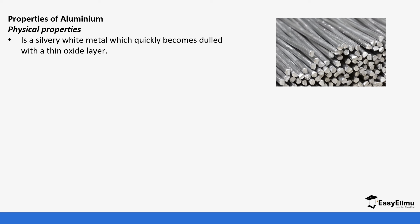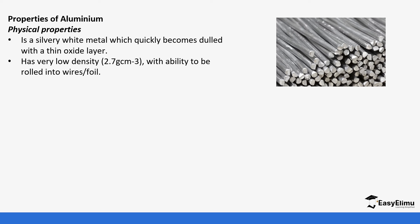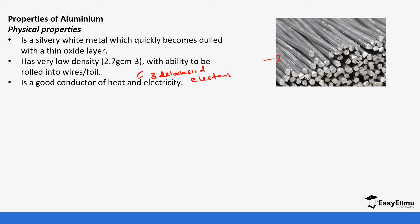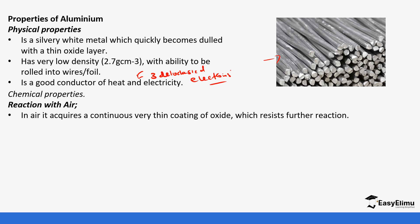Now let's go through some properties of aluminium. Aluminium is a silvery metal which tarnishes very quickly when exposed to air because of the formation of an oxide layer. It has very low density, which is why it can be rolled into wires. It is a good conductor of heat and electricity because it has three delocalised electrons. It is actually one of the best metals in terms of conductivity and heat.